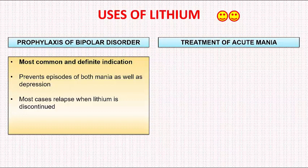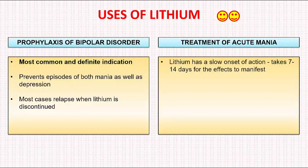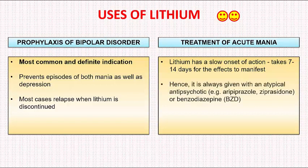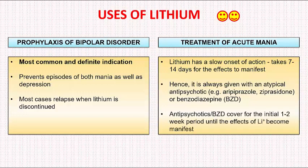The second indication is treatment of acute mania. Here, Lithium has a slow onset of action — it takes 7 to 14 days for the effects to manifest. Hence, it is always given along with an atypical antipsychotic such as Aripiprazole, Ziprasidone, etc., or a benzodiazepine. The atypical antipsychotic or the benzodiazepine provides cover for the initial 7 to 14 day period until the effects of Lithium become manifest.